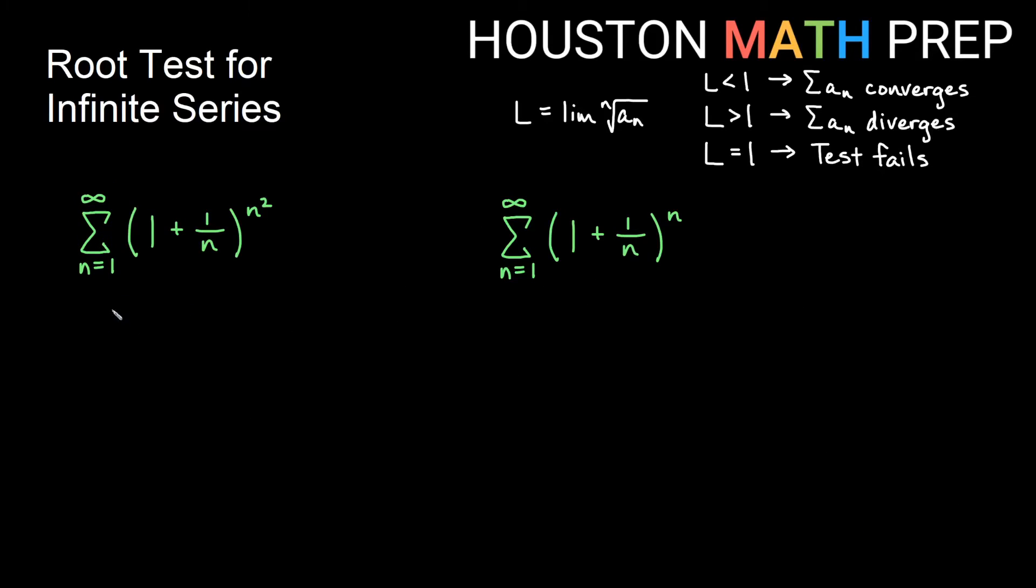Okay, looking at just a couple more here. They look very similar though. We have the sum of (1 + 1/n) all to the n squared. And then we have the sum of 1 over 1 plus n just to the n. So for this first one, we would look at the limit of the nth root of (1 + 1/n) all to the n squared.